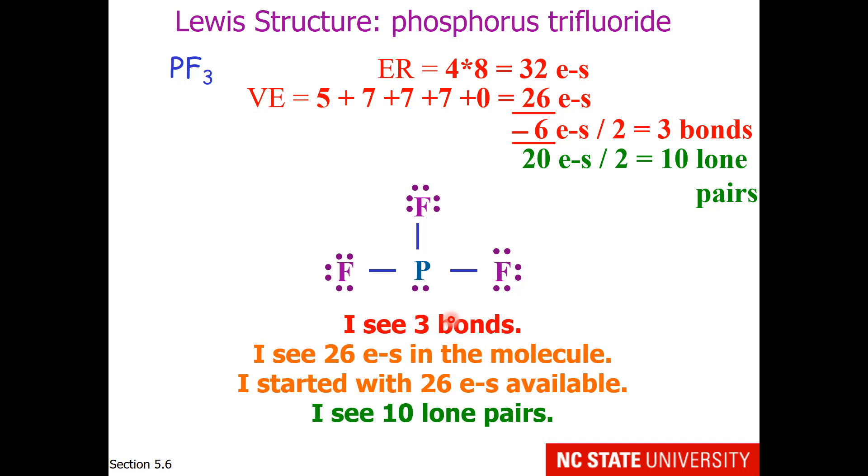Now let's double check our structure. I see three bonds. The entire structure has 26 electrons, which is our valence electrons. This is how we've used our 26 valence electrons, and 10 of those electrons are in lone pairs.